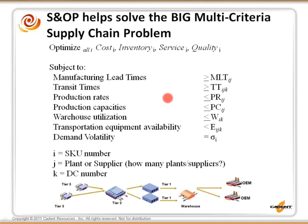S&OP helps solve this big multi-criteria supply chain problem. We look at the supply chain world as a huge multi-criteria problem — so complicated that we actually cannot really develop the equations for it. We want to optimize cost, inventory, service, and quality, and we're trying to balance all of those subject to a litany of constraints: manufacturing lead times, transit times, production rates, production capacities, warehouse utilization, transportation equipment availability, and demand volatility. We're doing this over a wide number of SKUs, a smaller number of plants or suppliers and DCs. We want to have the right products in the right place at the right time — that truly is a goal of the S&OP process.